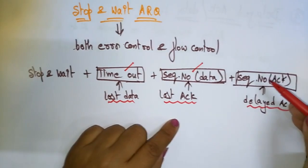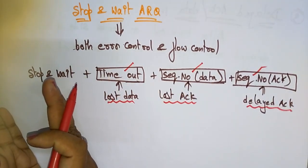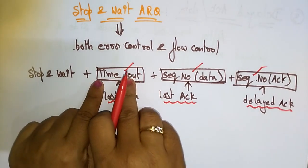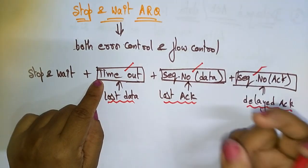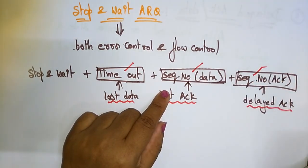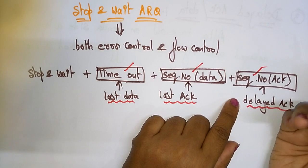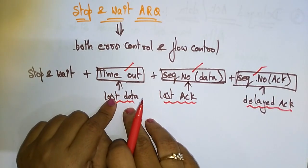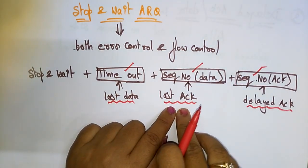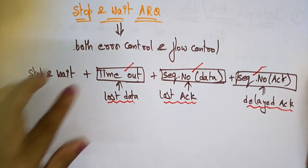Stop-and-Wait ARQ follows the rules of Stop-and-Wait and additionally assigns a timer to each frame and a sequence number to each data frame being sent. It also assigns sequence numbers to acknowledgements. With timeout we overcome lost data, with sequence numbers for data we overcome lost acknowledgement, and with sequence numbers for acknowledgement we overcome delayed acknowledgement.